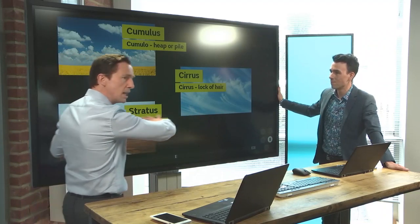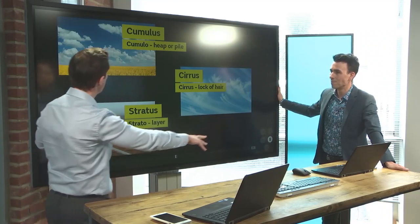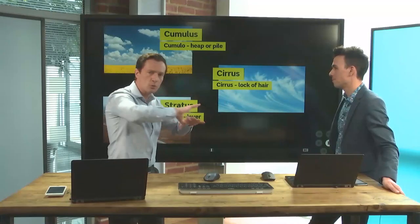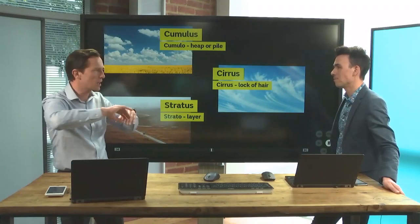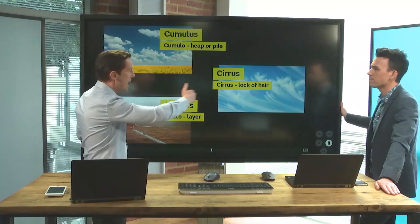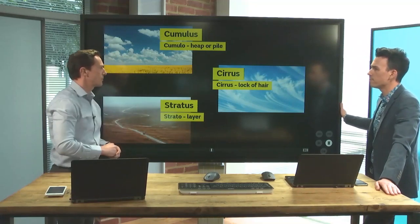Stratus: layer form cloud. Cumulus: they're the fluffy, heaped ones — cumulo meaning heaped, that's where that comes from. And cirrus: the sort of hair, looks like horse hairs, as they're often called.